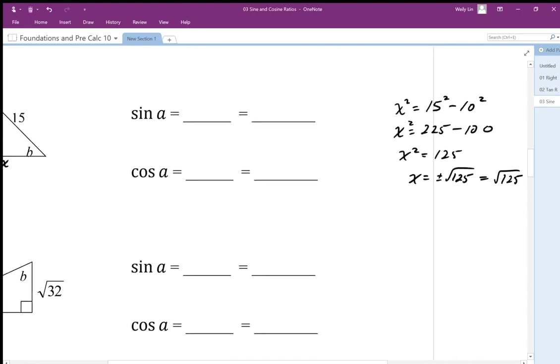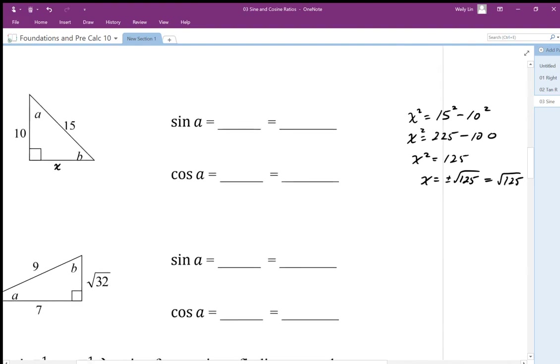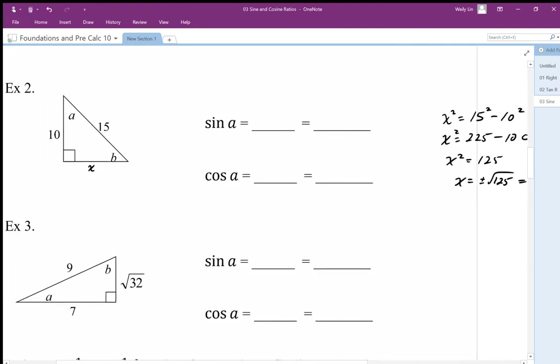Okay, that's approximately 11 point something. So the sine ratio, so I'm just going to write this in here, square root of 125. And again, I really want you to work on using these exact values and not having to rely on the decimal value.